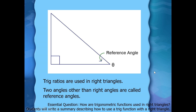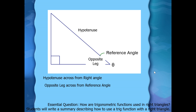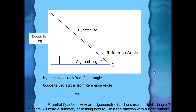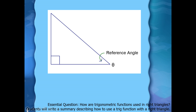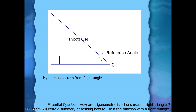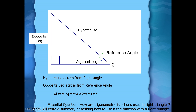So this is a quick review of what you did last year. You've got to watch the animation. Hypotenuse is across from the right angle. Opposite leg is across from the reference. Adjacent is next to it. So: hypotenuse is across from the right angle, opposite is across from the reference, adjacent is next to the reference.